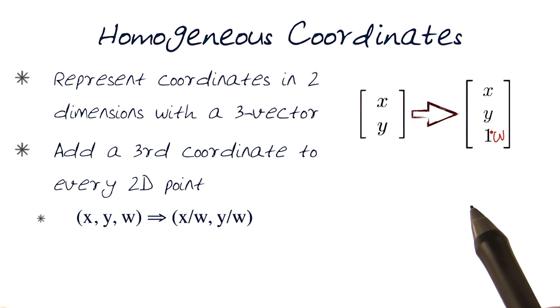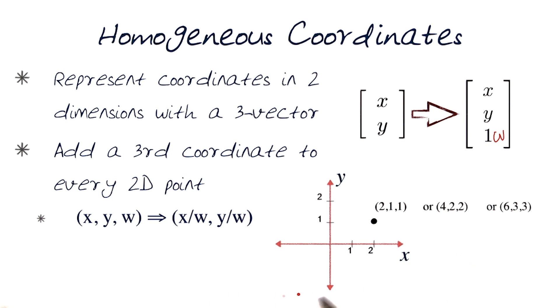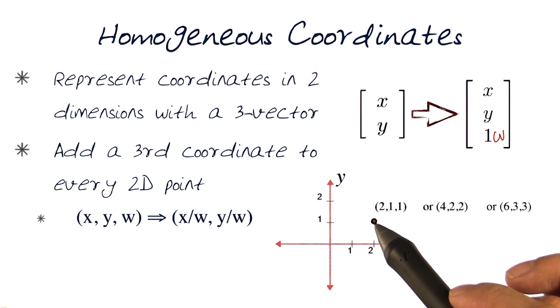Now there are certain subtle things we need to pay attention to. Here, for example, is my simple two-dimensional x and y. I can look at this point here, two and one. Just looking at x, y, the values would be two, one.